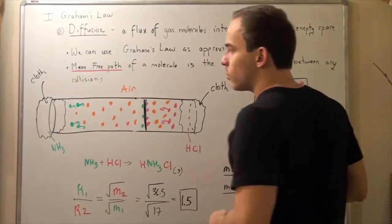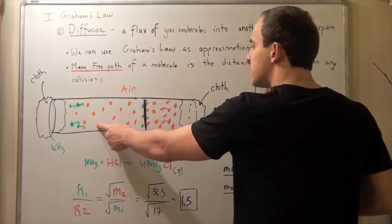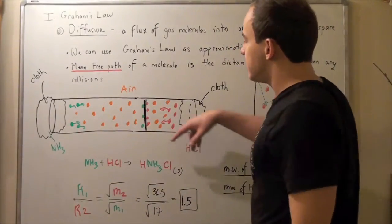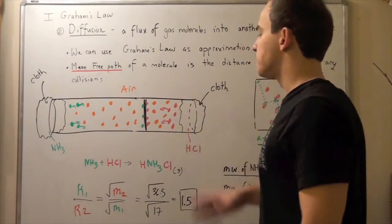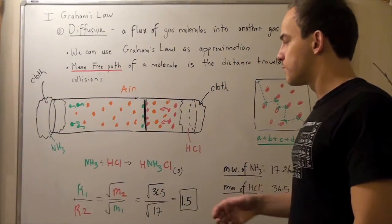And this green molecule, for example, will first collide with this guy, then move here, collide with the wall, then collide with this guy, and so on, until it gets to some point here. Now, when the green guy reaches the red guy, something will happen. Well, the reaction is as follows.